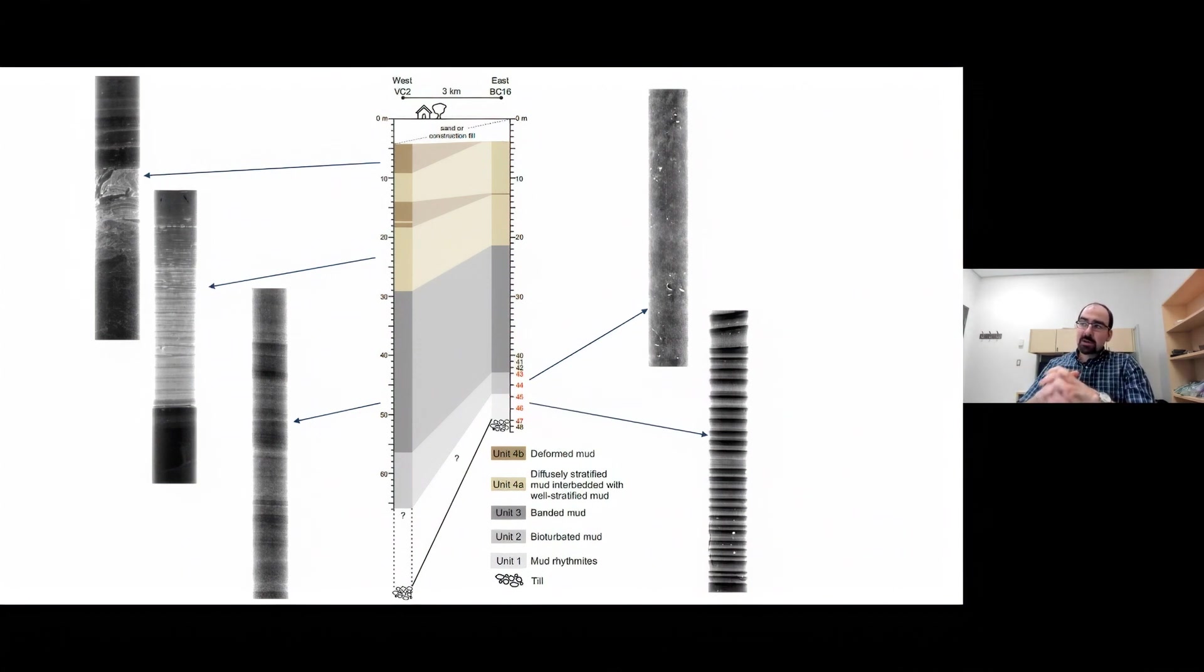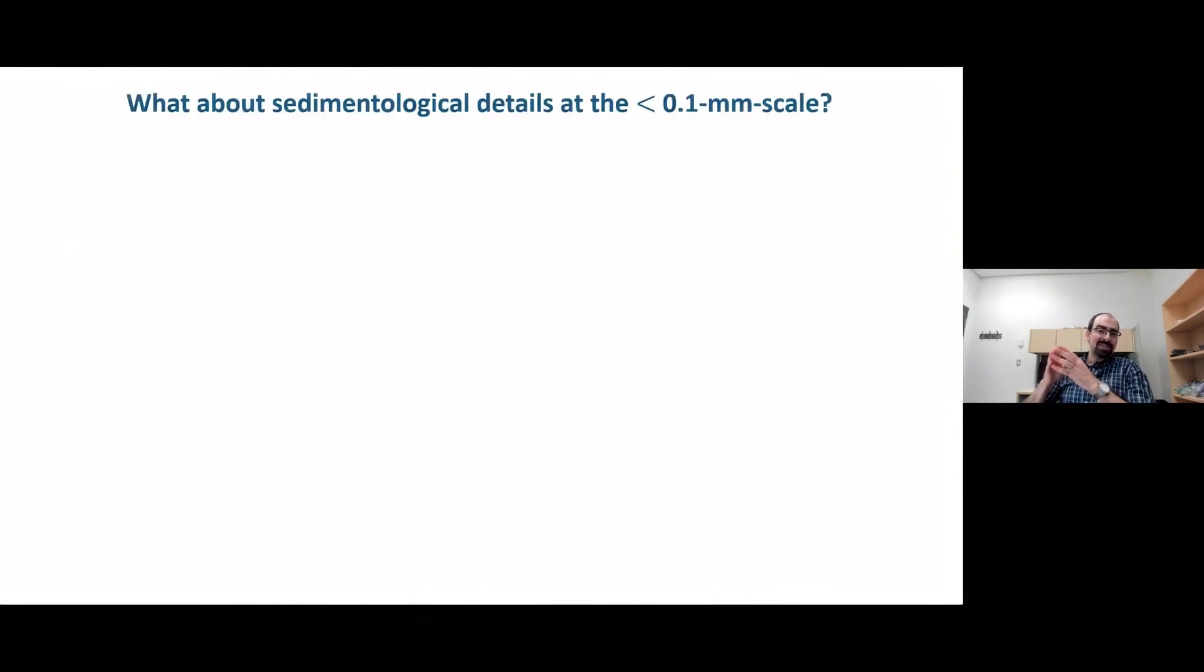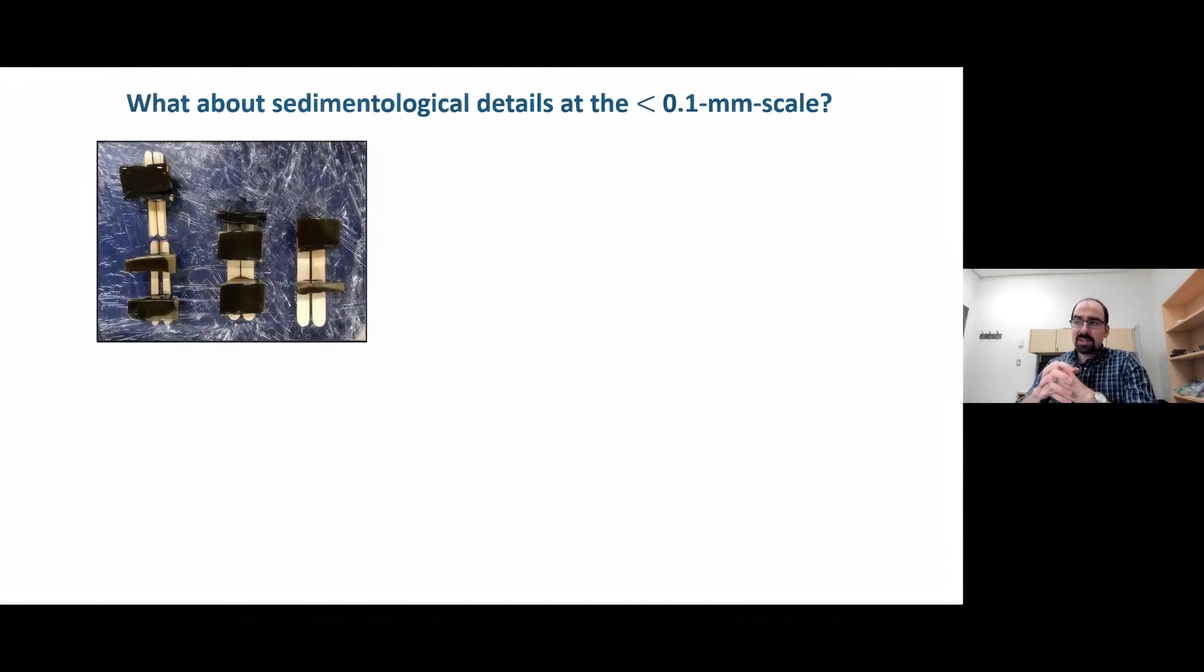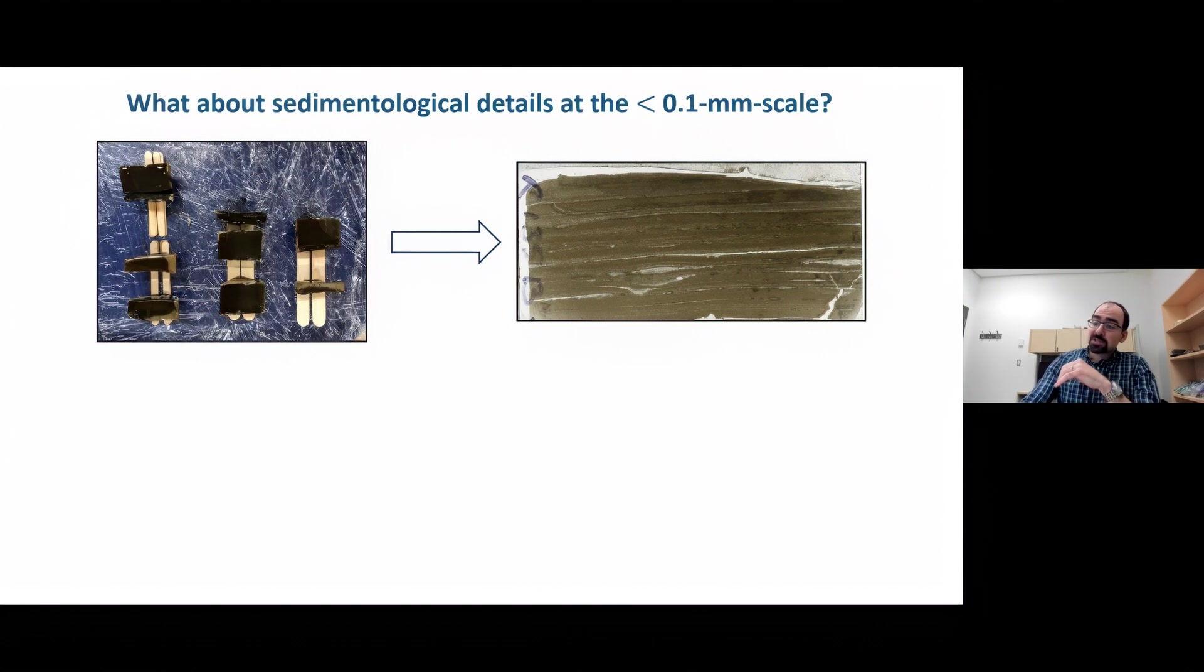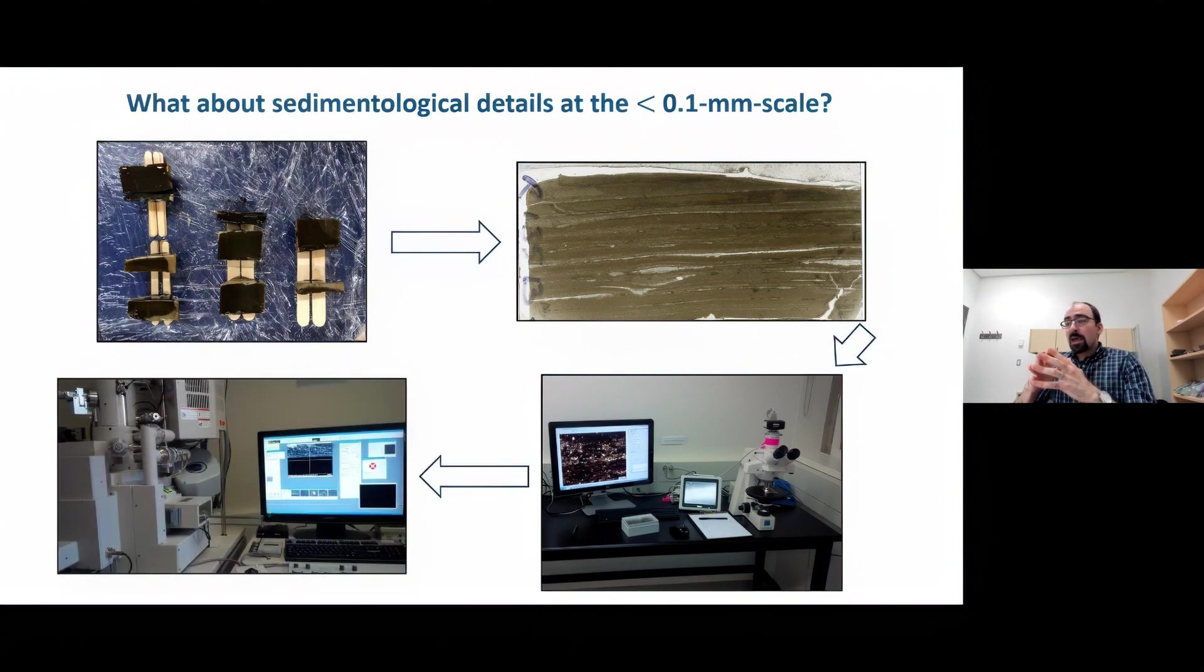The use of a CT scan data set provides sedimentological detail at about a 0.5 millimeter scale, the CT scan resolution. It allows for identification of bedding, lamina, sedimentary structures, macroscopic burrows, and presence of bioturbation. But what about sedimentological details at a sub 0.1 millimeter scale, that of sediment composition, texture, and fabric? To determine these details, we sampled the cores. These are uncompacted, unconsolidated mud from which we produced polished thin sections. These were examined using an optical petrographic microscope, and the polished samples were then coded for SEM analysis.